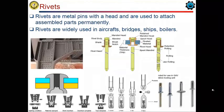Our next machine elements are rivets. In the old times of the industrial revolution, since welding was not developed well enough, rivets were used in many fields of machinery. They were used in metal construction connections, ships, boilers, and so on.